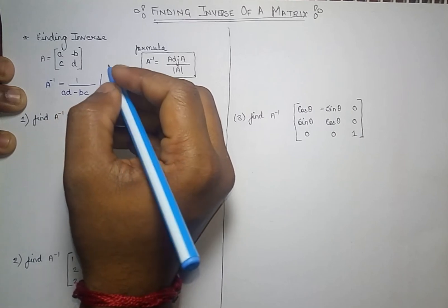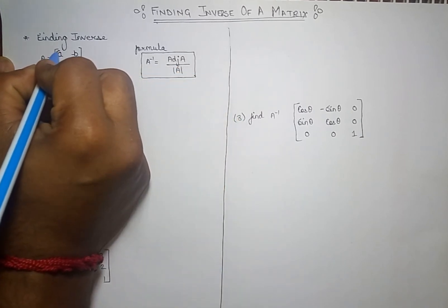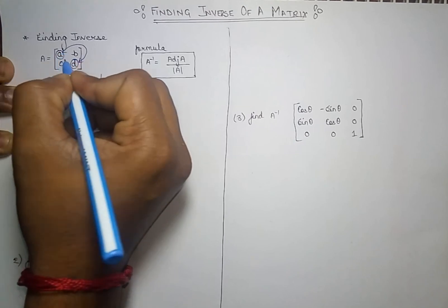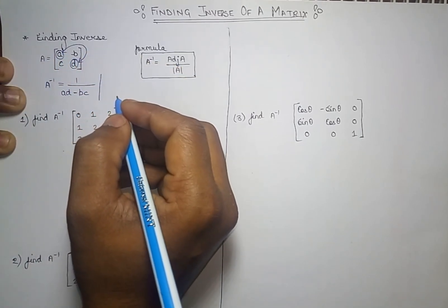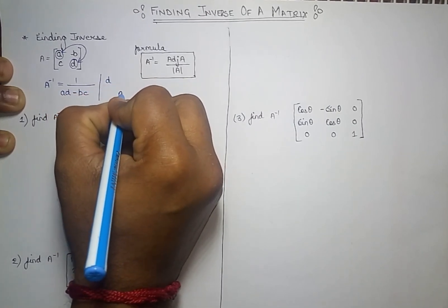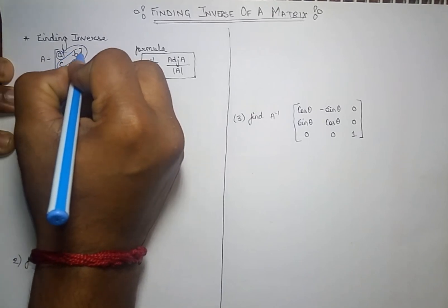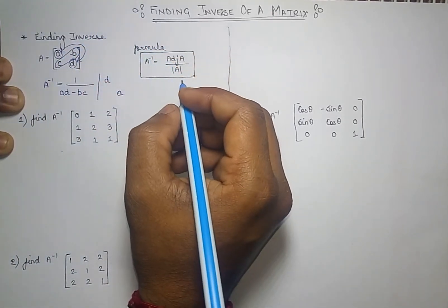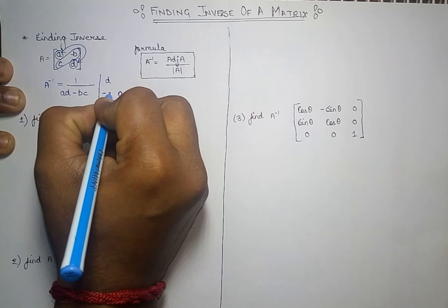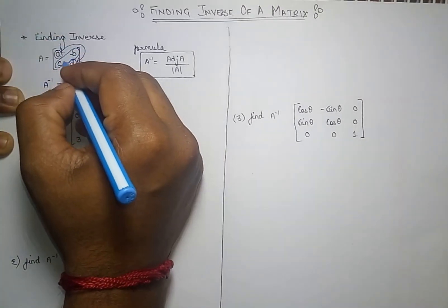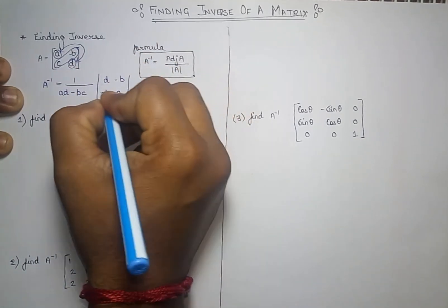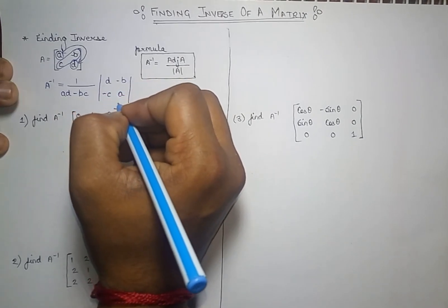For the adjoint of a 2×2 matrix, the two diagonal elements are interchanged — so a and d are swapped. The off-diagonal elements b and c are not swapped, but their signs are changed to negative. So the adjoint will have d and a on the diagonal, and minus c and minus b on the off-diagonal.